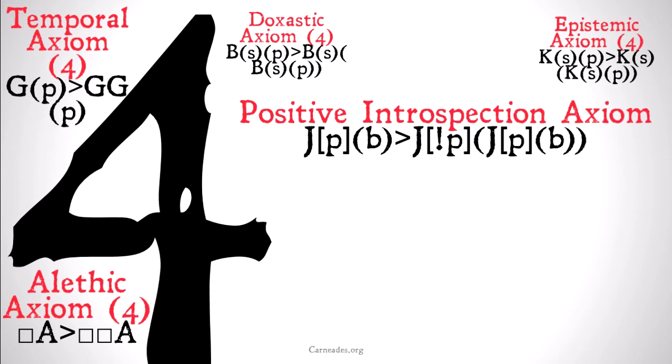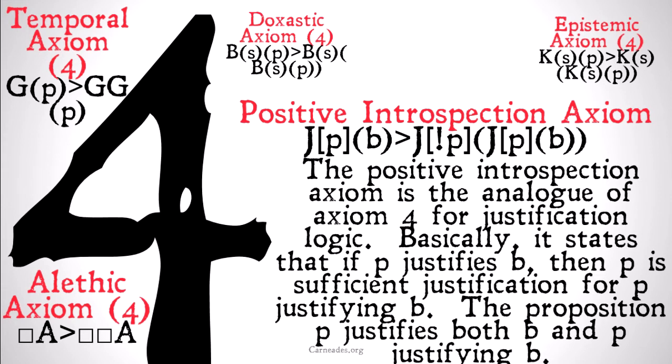It's going to be called the positive introspection axiom. If P justifies B, that implies that P is sufficient justification for P justifying that B.